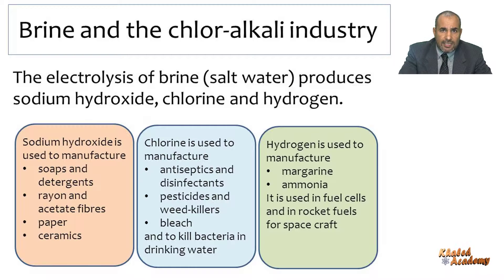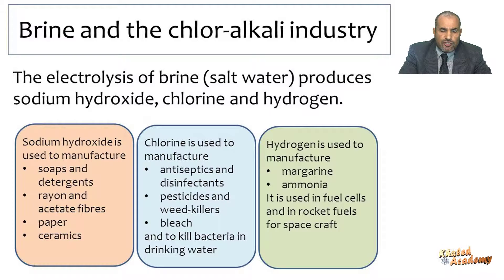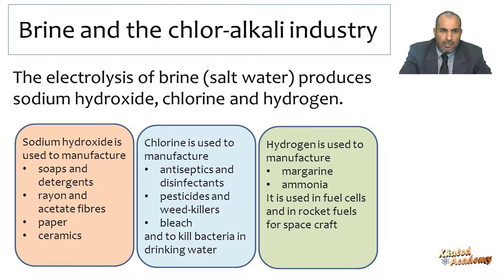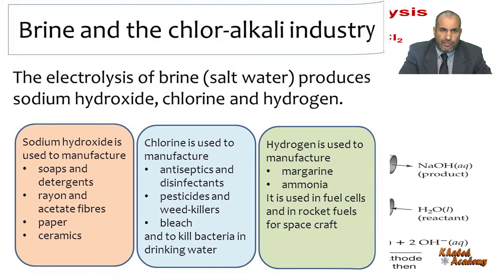Chlorine is used in water and sewage treatment, as a bleaching agent in the manufacturing of paper, and in the manufacture of plastics such as polyvinyl chloride (PVC), while sodium hydroxide is employed in making paper, textiles, soaps, and detergents.